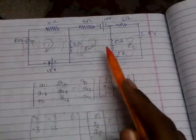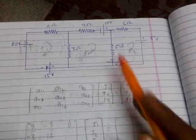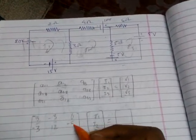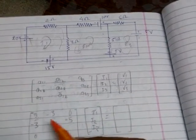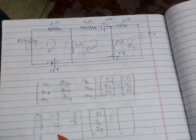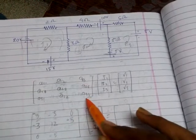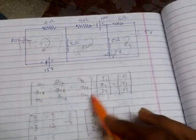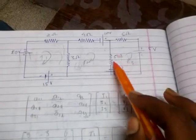For a23, the common resistance between loops 2 and 3 is 5, so we write minus 5. For a31, there is no common resistance between loops 1 and 3, so it is 0. For a32, the common resistance between loops 3 and 2 is again minus 5. For a33, sum all resistances in loop 3: 5 plus 6 equals 11 ohms.